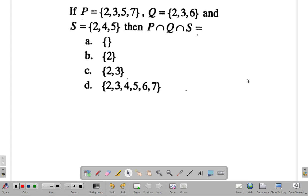It says here P is the set {2, 3, 5, 7}, Q is {2, 3, 6}, S is {2, 4, 5}, then P intersect Q intersect S is. So remember that when you talk about intersection it means the elements that are in all of them at the same time, they're common to all the sets.